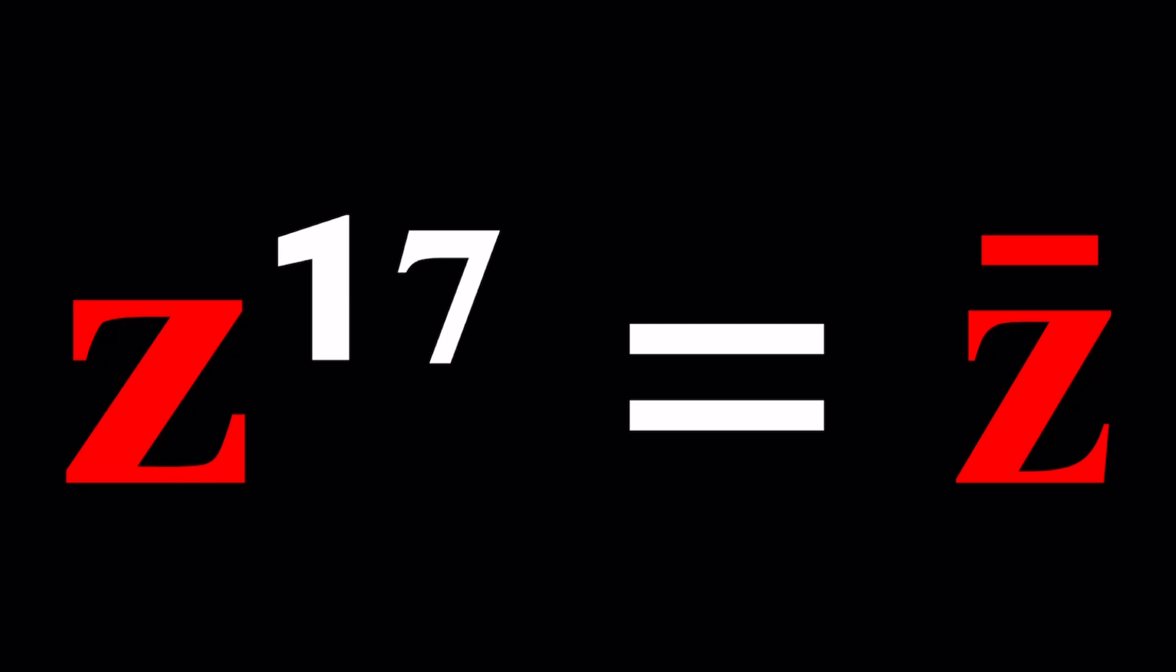Sort of, right? What is the name for that? Anyways, I forgot. So we have Z to the 17th power equals Z bar, which is the complex conjugate of Z.